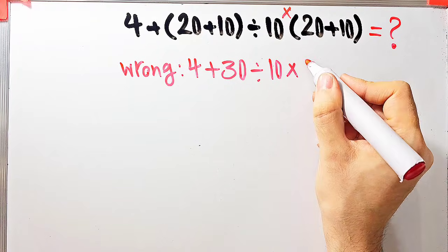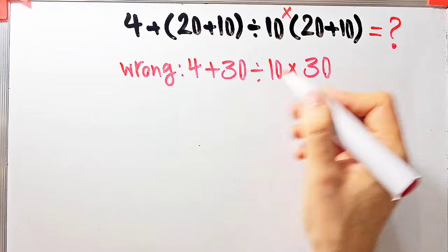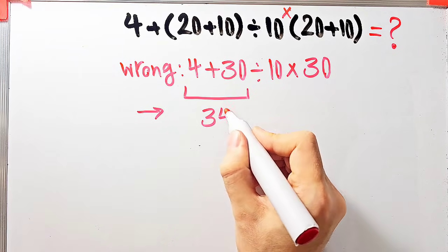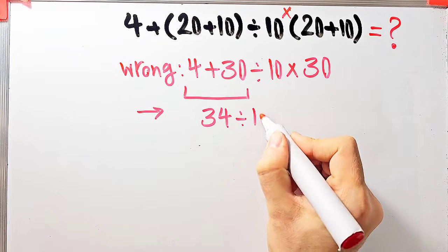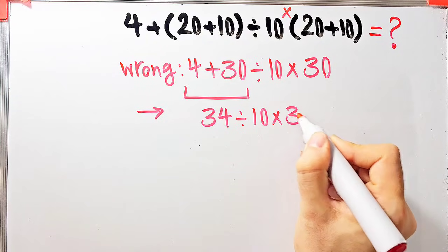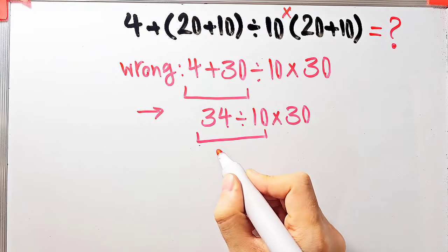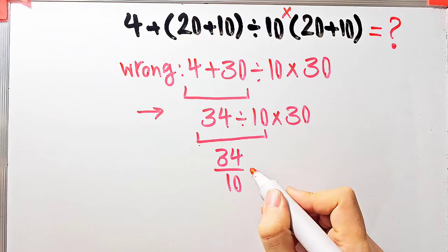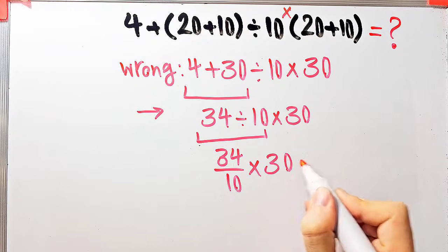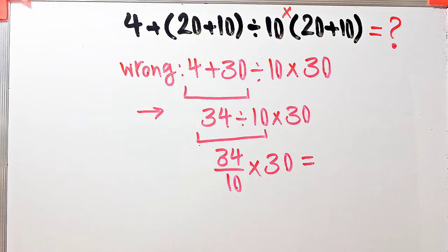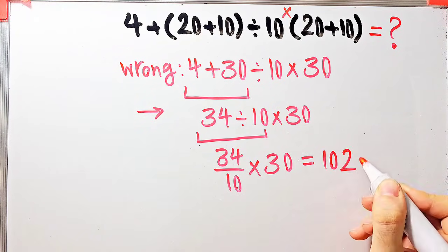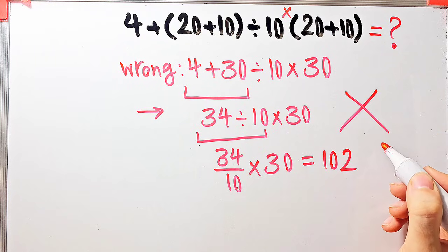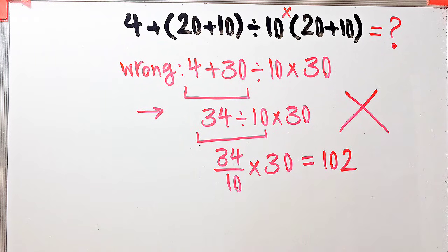Starting from the left: 4 plus 30 equals 34, 34 divided by 10 equals 34 over 10, and 34 over 10 times 30 equals 102. They say the final answer equals 102, but this answer is definitely wrong.